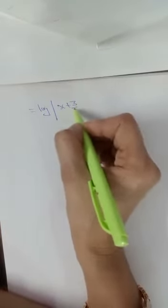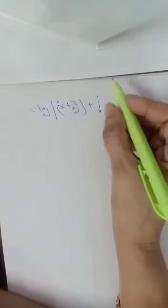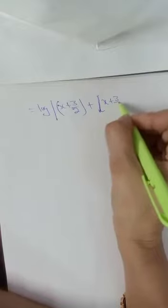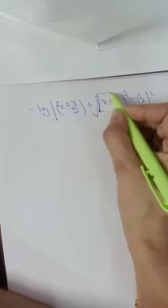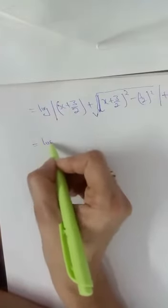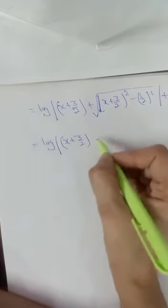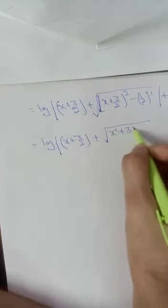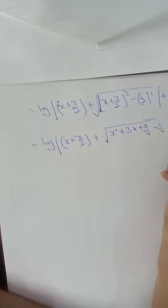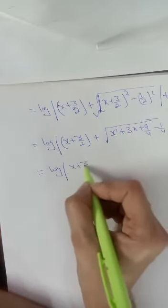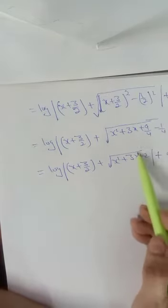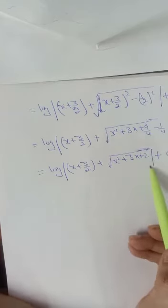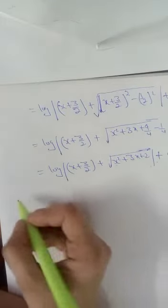Therefore, the answer is log|x + 3/2 + √((x + 3/2)² - (1/2)²)| + c. Expanding the square root: √(x² + 3x + 9/4 - 1/4) = √(x² + 3x + 2). So the final answer is log|x + 3/2 + √(x² + 3x + 2)| + c — notice the expression under the root returns to the original function x² + 3x + 2.